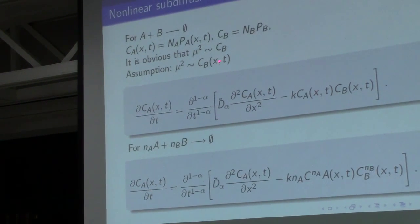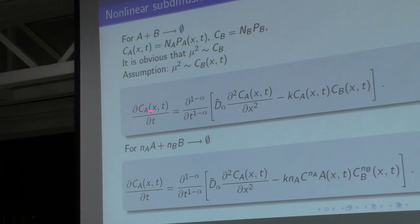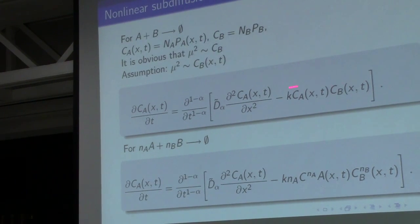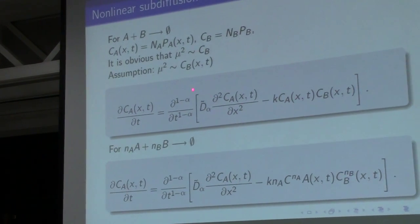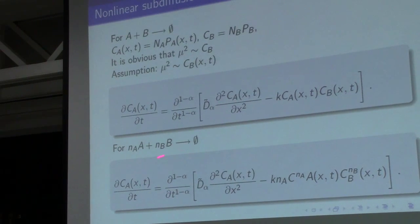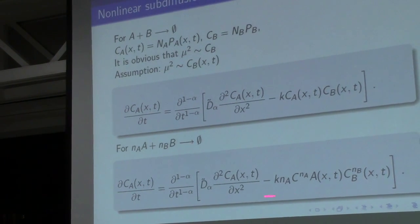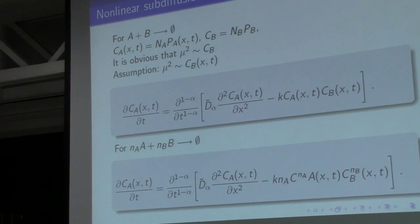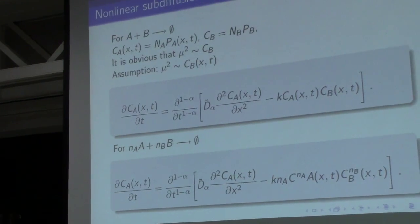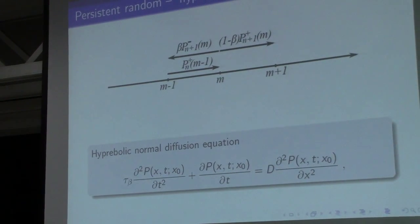We have then obtained the following non-linear equation for the first reaction, and for the more general second reaction, this equation. Now let us consider the persistent random walk.